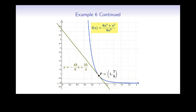In this diagram, we see the graph of the function f in blue, the point of tangency at 1 comma 7/8, and the tangent line in green, whose equation we found in this example.